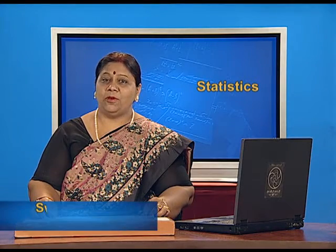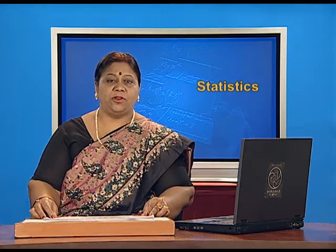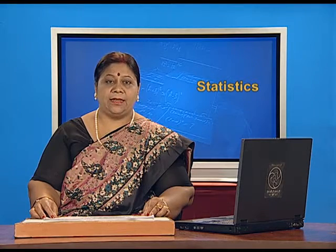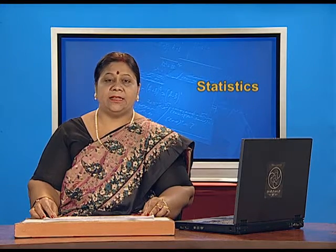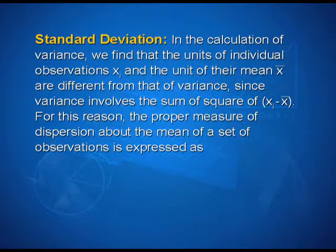Hello students. In the previous session, we introduced ourselves to the variance. In this session, we shall learn about standard deviation. In the calculation of variance, we find that the units of individual observations xi and the unit of their mean x bar are different from that of the variance, since variance involves the sum of the squares of xi minus x bar. For this reason, the proper measure of dispersion about the mean of a set of observations is expressed as the positive square root of the variance and is called standard deviation.